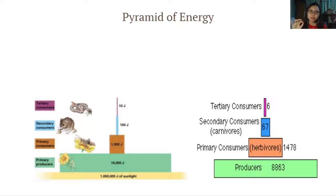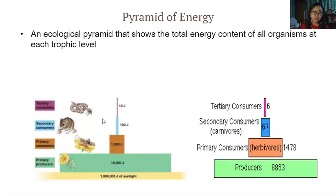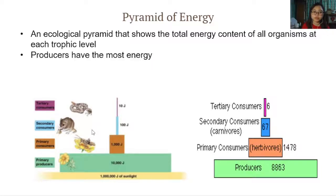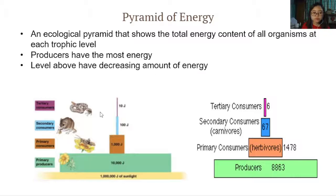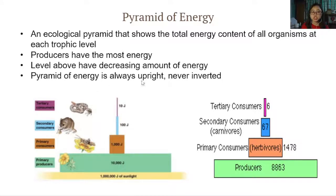That is the second type of ecological pyramid. Moving on to the final type — the pyramid of energy, which is the one used in the calculations earlier. The pyramid of energy is an ecological pyramid that shows the total energy content of all organisms at each trophic level. Producers will have the most energy, and the levels above them will have decreasing amounts of energy. The pyramid of energy is always upright, never inverted — unlike the pyramid of numbers and pyramid of biomass, which can sometimes be inverted.